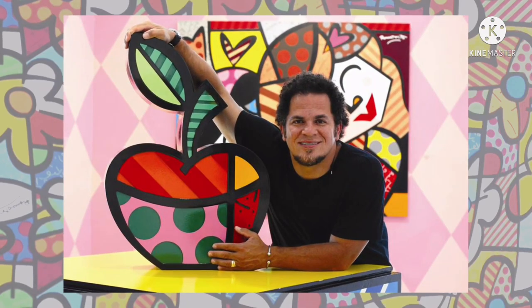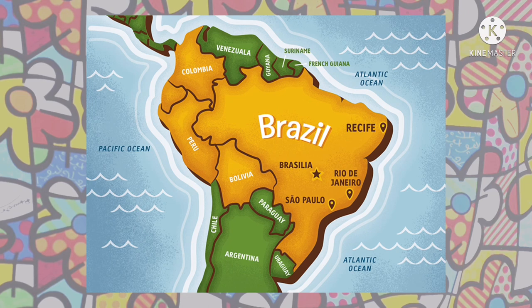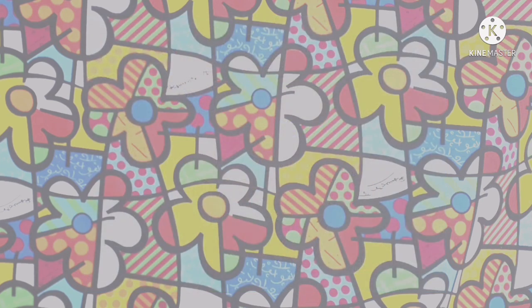Romero Brito is one of my favorite artists. I love his artistic style. He was born in 1963 in Recife, Brazil, where he grew up with seven brothers and sisters. Because he came from a big family, money was tight.